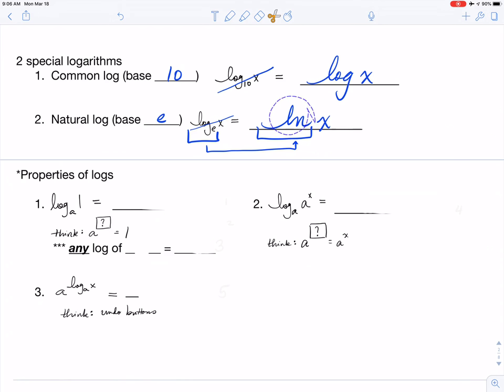The first property is log base a of 1 is equal to what number. What I want you to do is think: a to what power is equal to 1? The hint I'm giving you is I'm turning this logarithm back into an exponential and making you think in terms of exponentials. Whatever is in that question mark is going to be the answer in your blank.